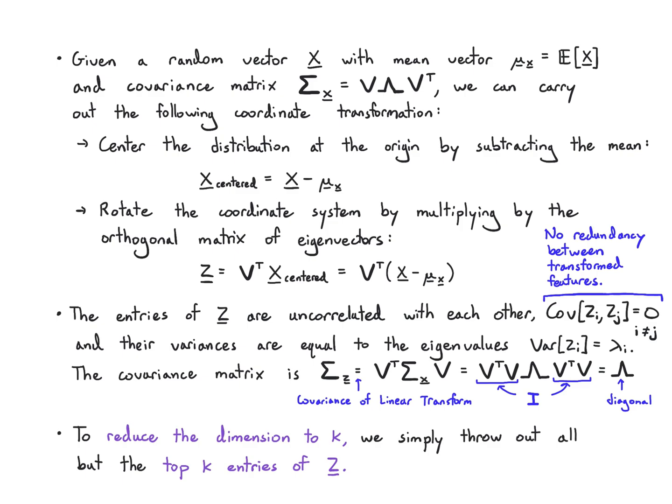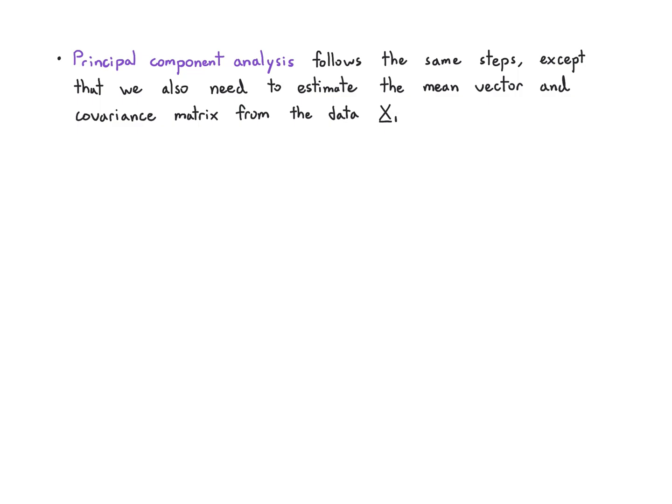Principal component analysis basically follows the same steps except we need a first step, which is that we don't know the mean and covariance in advance. We need to estimate the mean vector and covariance matrix from data. This is simple, it's something we can do in MATLAB or in any other numerical software. We're going to collect all of our examples, d dimensional examples, into a single data matrix which is n times d.